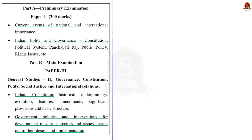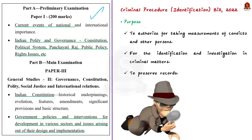Here I have given you the syllabus so you can know how relevant this topic is for our preparation. Now first, what is the purpose of this bill? This bill has been enacted to authorize the taking of measurements of convicts and other persons. These measurements are taken for identification of convicts in criminal matters, to help with investigation, and to be preserved as a record. So for these purposes, the bill authorizes taking measurements of convicts and other persons.